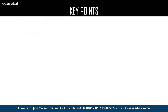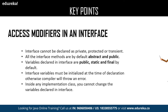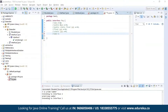Let us continue with the key points. The next one is access modifiers in an interface — an interface can be declared as private, protected, and transient. All interface methods are by default abstract and public. Variables declared in interface are public, static, and final by default. Interface variables must be initialized at the time of declaration. Here I have defined an interface by name 'try'. I am declaring an integer variable a using int a = 10, which is valid. Similarly you can declare it using the public access modifier, or using public, static, and final, or just final and static — all of the above are the same.